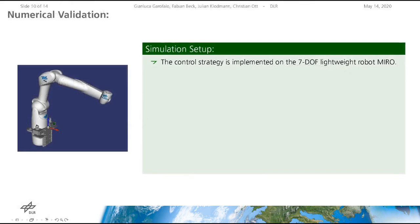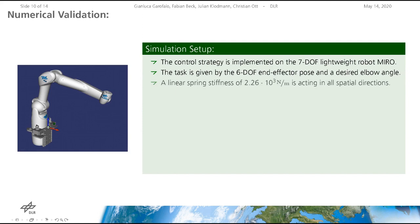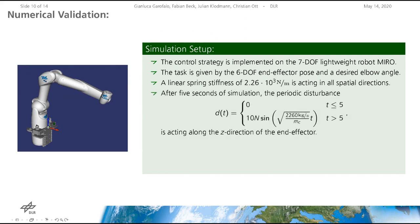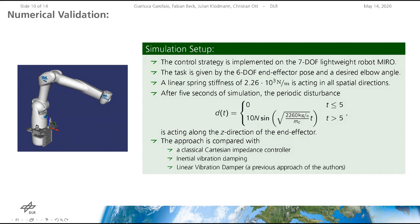The control strategy is implemented on the seven-link lightweight robot Miro. The task is given by the six degrees of freedom end effector pose and a desired elbow angle. A linear spring stiffness of 2260 N per meter is acting in all spatial directions. After five seconds of simulation, the periodic disturbance D is acting along the C direction of the end effector. The approach is compared with a classical Cartesian impedance controller, inertial vibration damping, and the linear vibration damper, which is a previous approach of the authors.